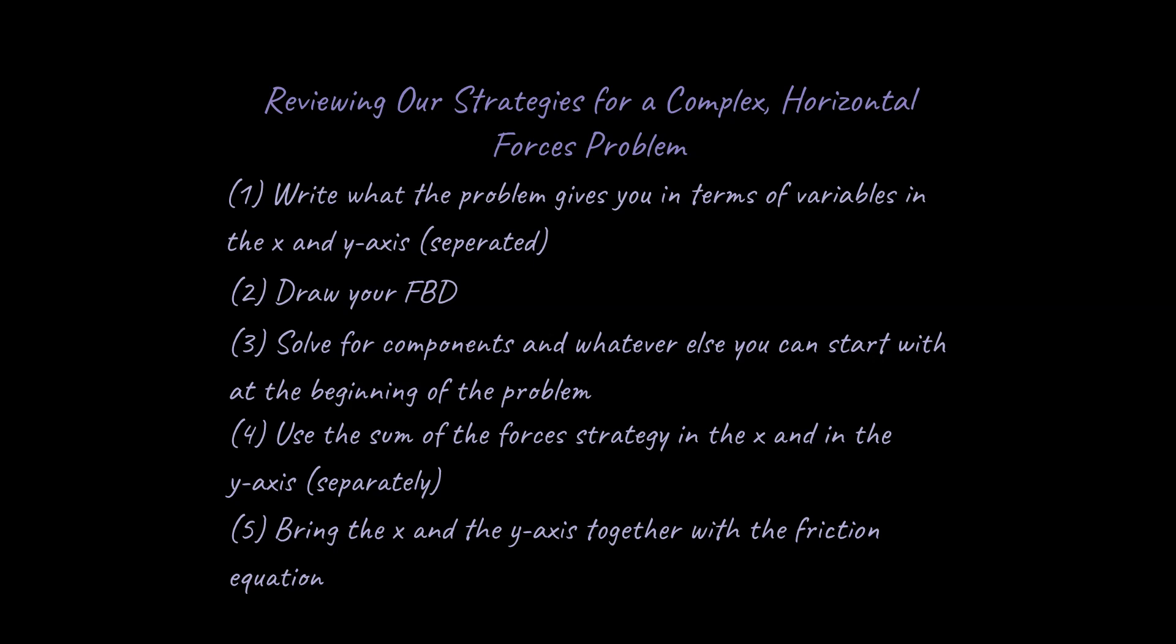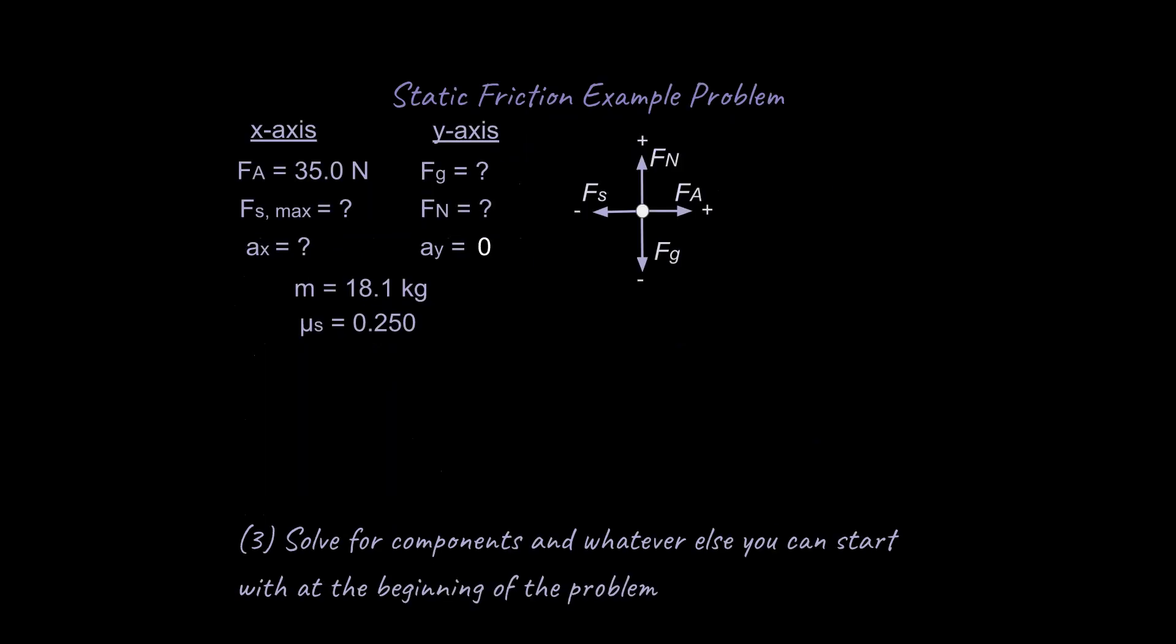We're going to write what the problem gives you in terms of variables and the x and y-axis separated out. We draw our free body diagram. We've already done number one and number two for this problem. Then we're going to solve for components and whatever else we can. Start with things that are obvious that we can solve for at the beginning of the problem. This problem has no components. This problem has no vector at an angle to break down into x and y components. So in that sense it's a little easier. Then we use the sum of the force strategy in the x and the y and then we bring those together with the friction equation because the friction equation is special in the way that it has something in the x and something in the y.